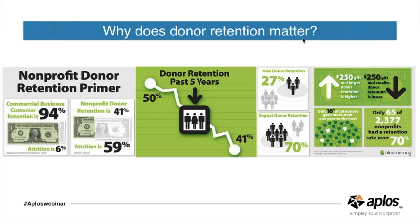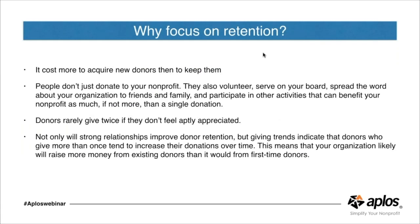If you can get a second or third gift — what we call a recurring gift — from a donor, your retention rates go up significantly. If you're using an online giving form that does not allow recurring giving, you might want to explore something new. Here at APLOS we have a great online form with WePay. If you can get folks locked in making regular commitments — whether monthly, quarterly, or annually — your retention rates are going to improve.